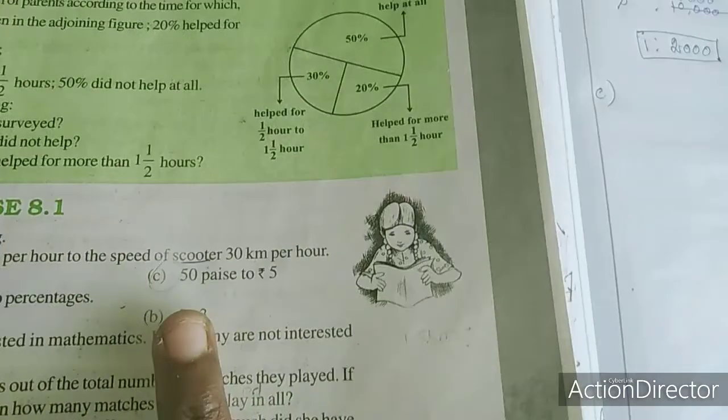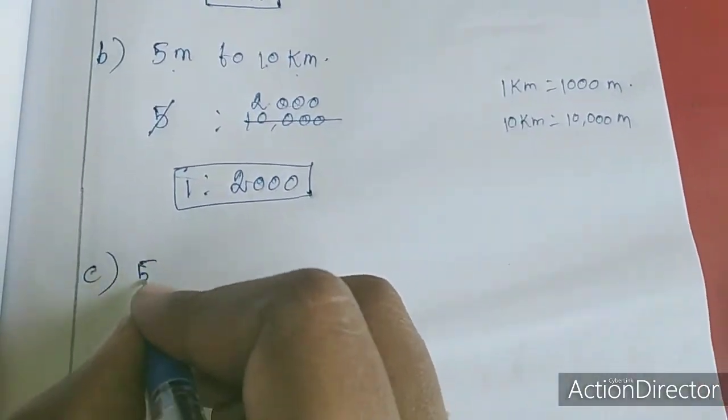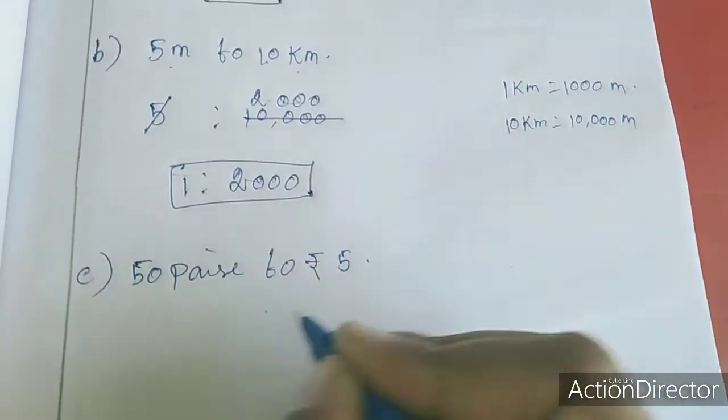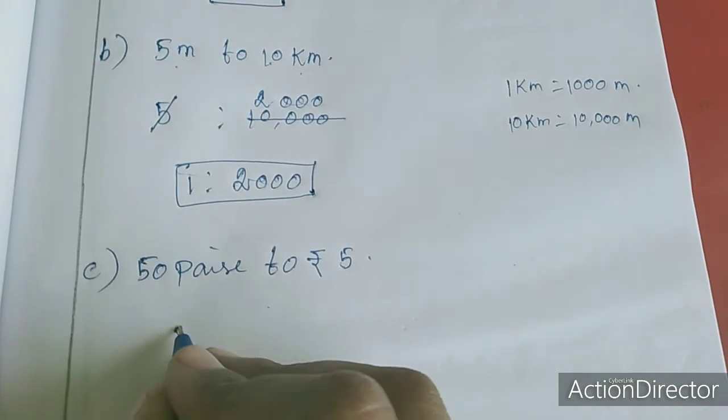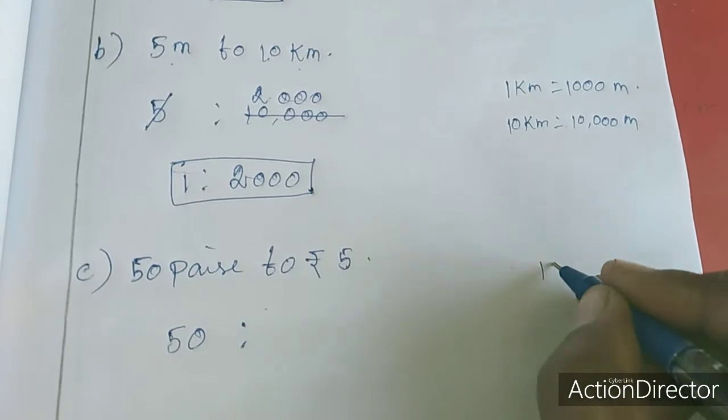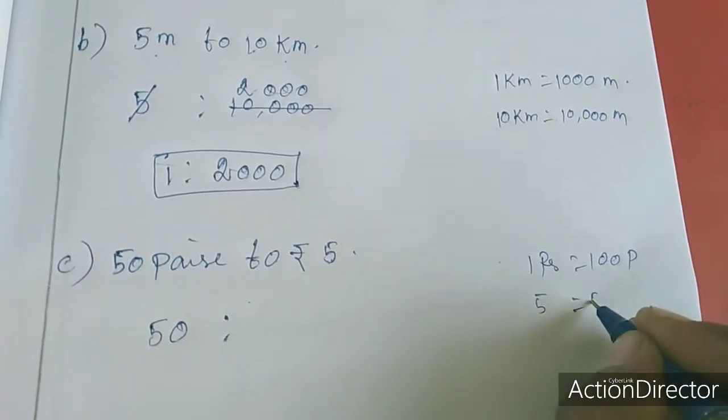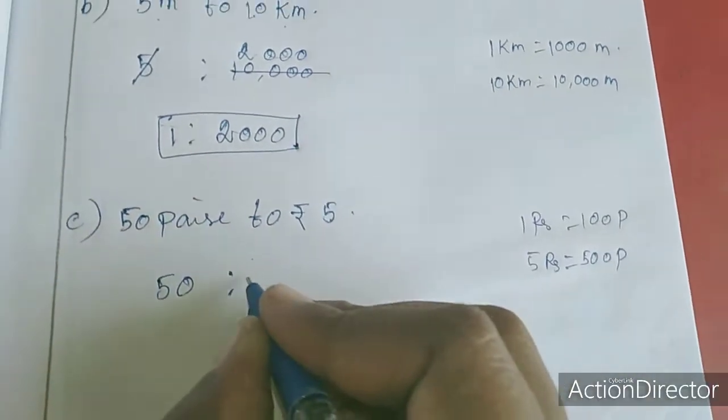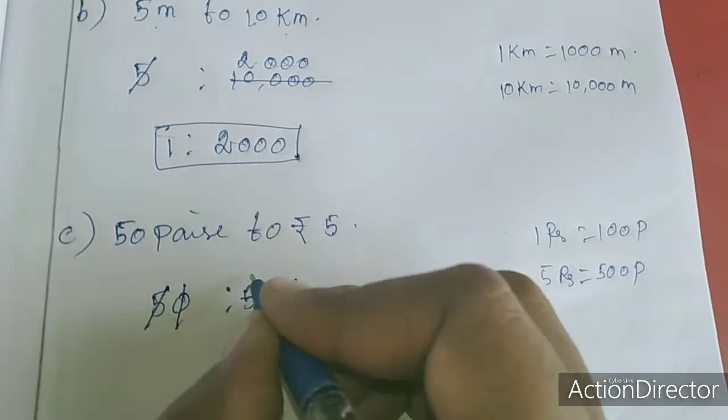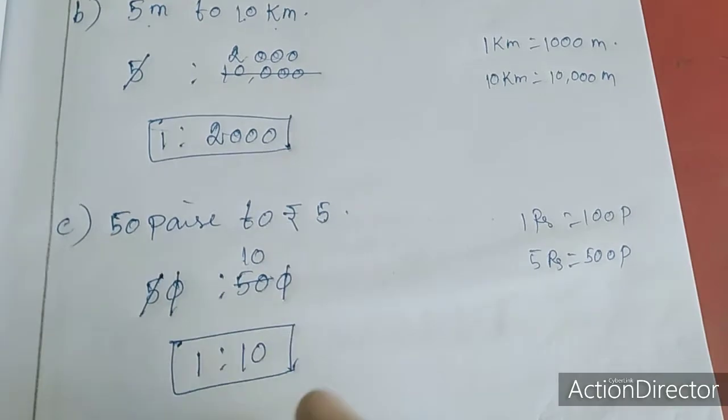Now we will move to the C sum. C sum is 50 paise to rupees 5. So 50 paise, I wrote 50. Here 5 is in rupees. We itself know 1 rupee equals 100 paise, so 5 rupee equals 500 paise. So I am applying here 500. 0, 0 cancel, 1 times 5 is 5, 10 times 5 is 50. So the ratio is 1 is to 10. This is the ratio for C sum.